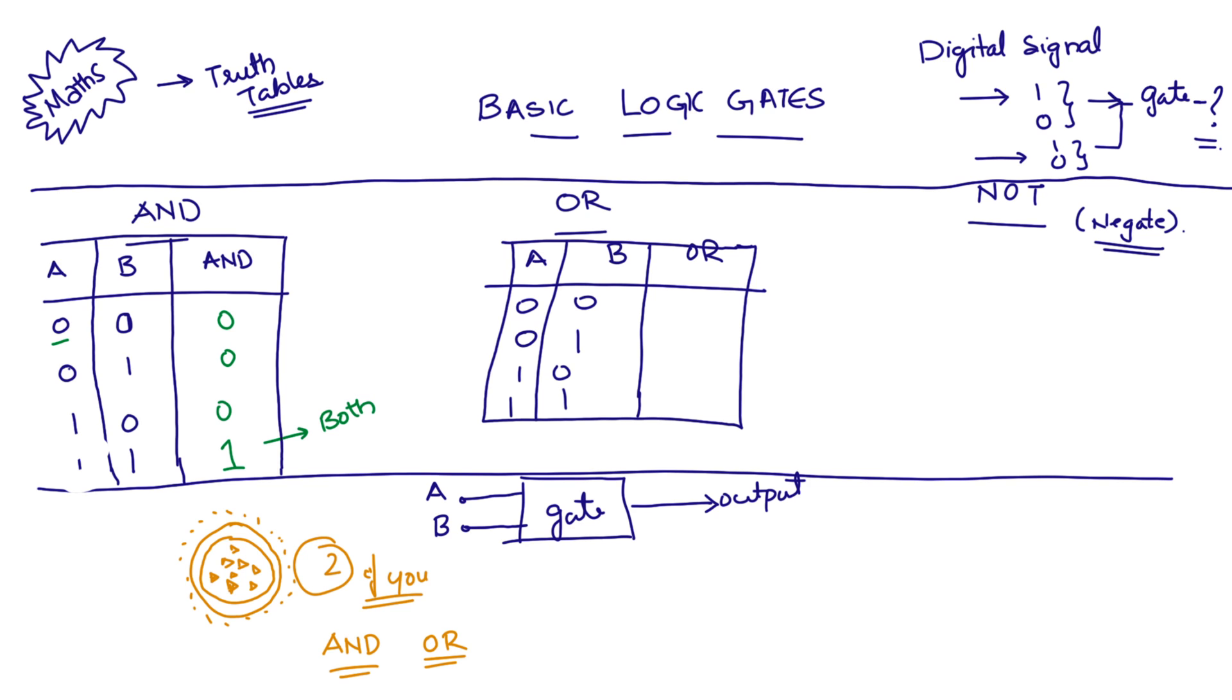If you think of a third input, only when all the inputs are 1 or high, only then the output of the AND gate will be high. Conversely, for the OR gate, if either of the two inputs is 1 or high or positive, then the output of the OR gate will be 1. Even if you add multiple inputs, it means even if one of all the inputs is high or 1 or positive, then the output of the OR gate would be high.